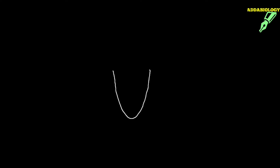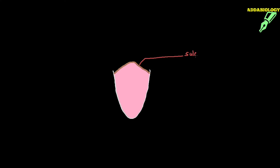Let me draw a tongue for you. The tongue is triangular in shape. The posterior part of the tongue has a V-shaped fold called the sulcus terminalis. The sulcus terminalis distinguishes the back portion of the tongue from the front portion. Just anterior to the sulcus terminalis, you get the first and largest papillae — the vallate papillae.